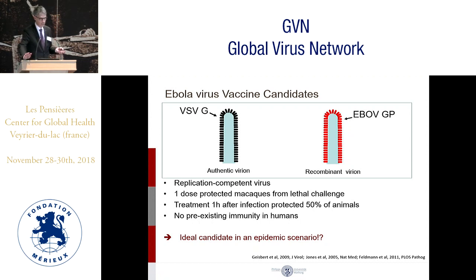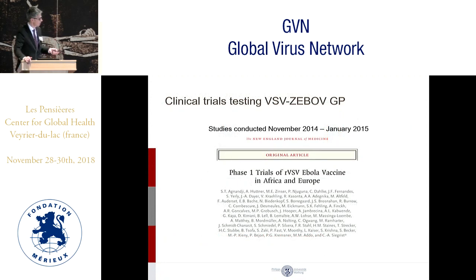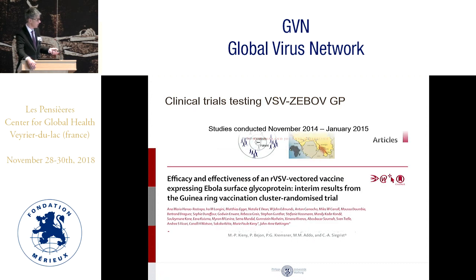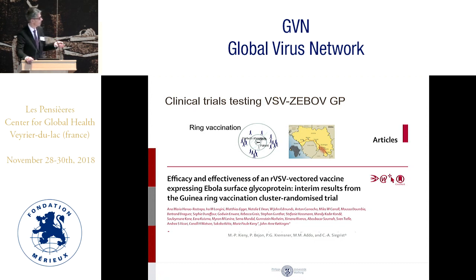In a feverish attempt to get the VSV-based vaccine and the recombinant adenovirus into clinical studies, several Phase 1 trials were conducted in Europe and Africa to test for safety, tolerability, and immunogenicity. These were successful, and the results informed a Phase 3 trial conducted in Guinea with the VSV-Ebola glycoprotein vaccine. The Lancet publication confirmed that this Ebola virus vaccine was indeed efficacious in protecting vaccinees.